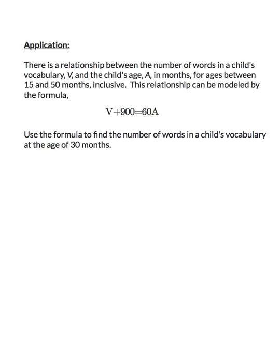Notice here we have V's and A's rather than x's — in application problems it's always a good idea to use letters that indicate what they represent. Also note the word 'inclusive,' which means the formula applies not just to ages between 15 and 50 months, but also includes 15 and 50 themselves. Since 30 is an age, we replace A with 30, giving us V plus 900 equals 60 times 30.